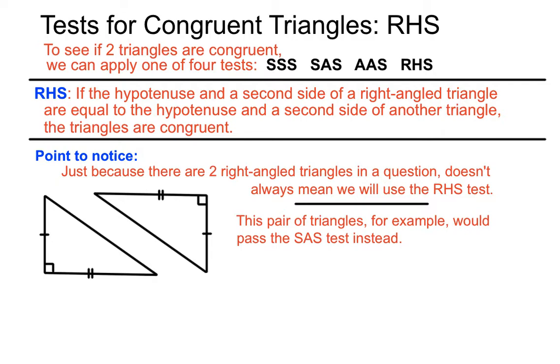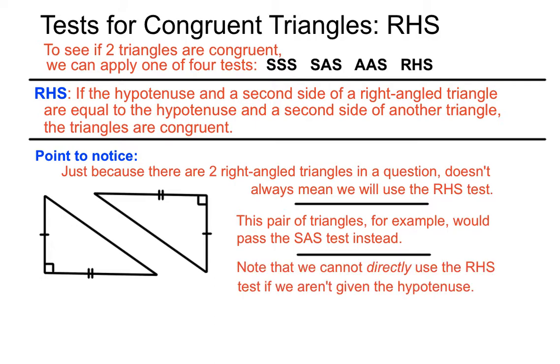They try and get you to conclude that just because it's got a right angle there, that we're automatically going for the RHS test. No. We can't directly say that this is using the RHS test if we're not given the hypotenuse.